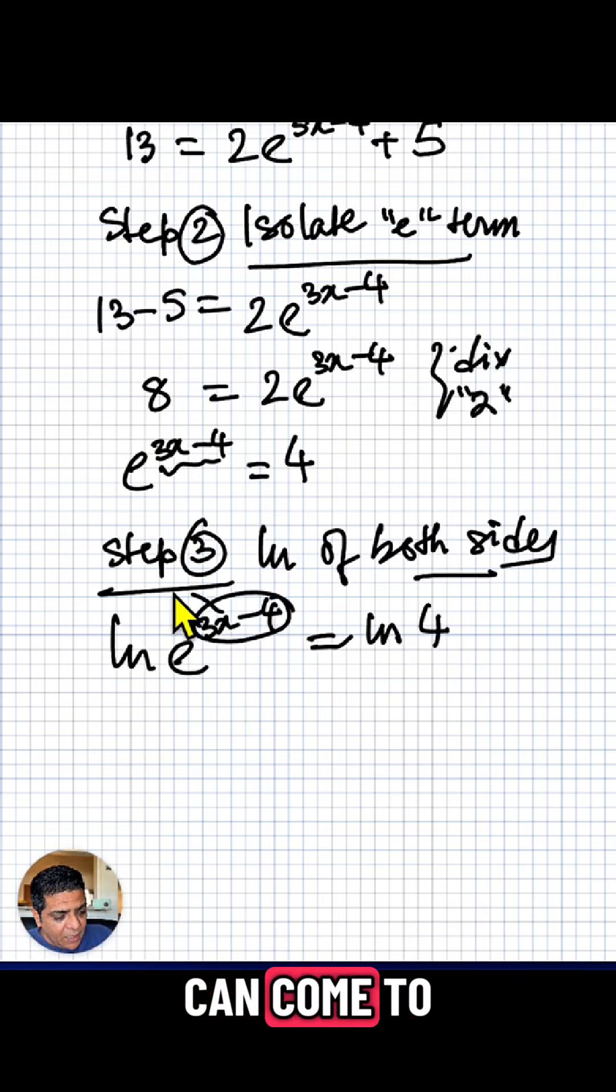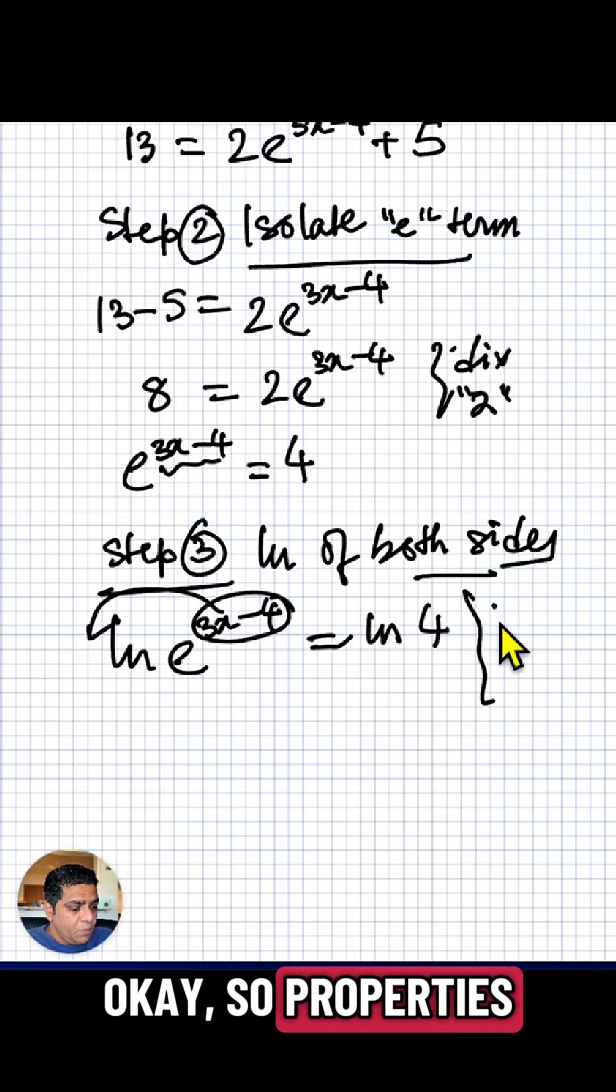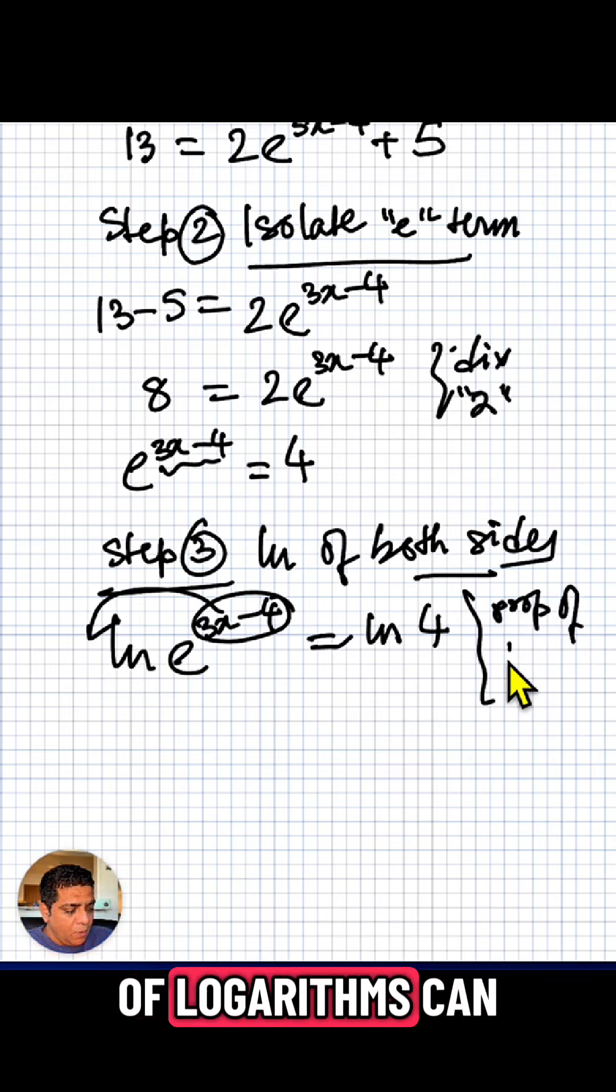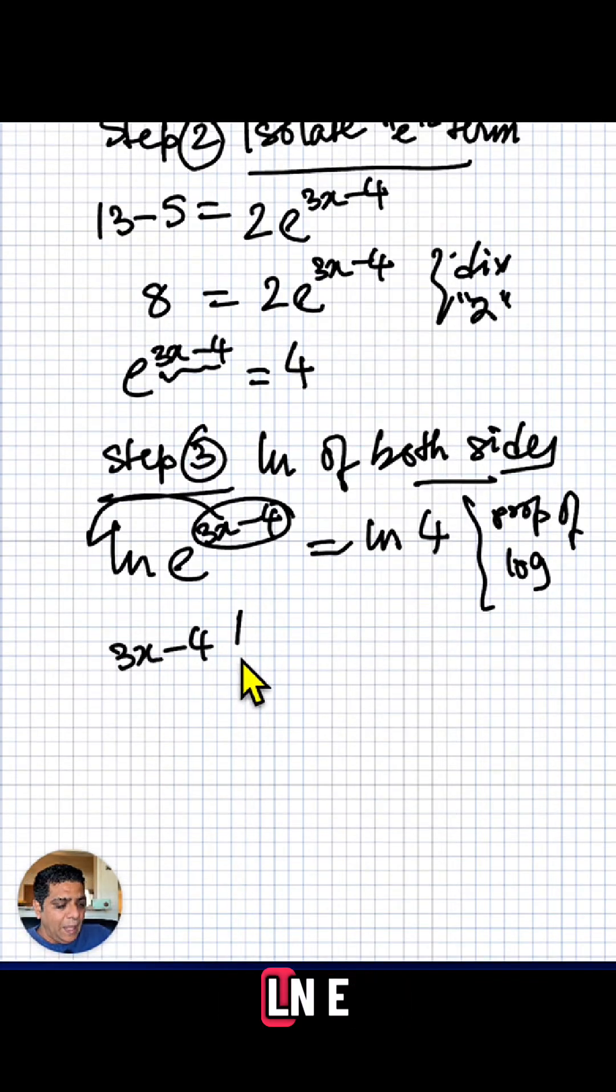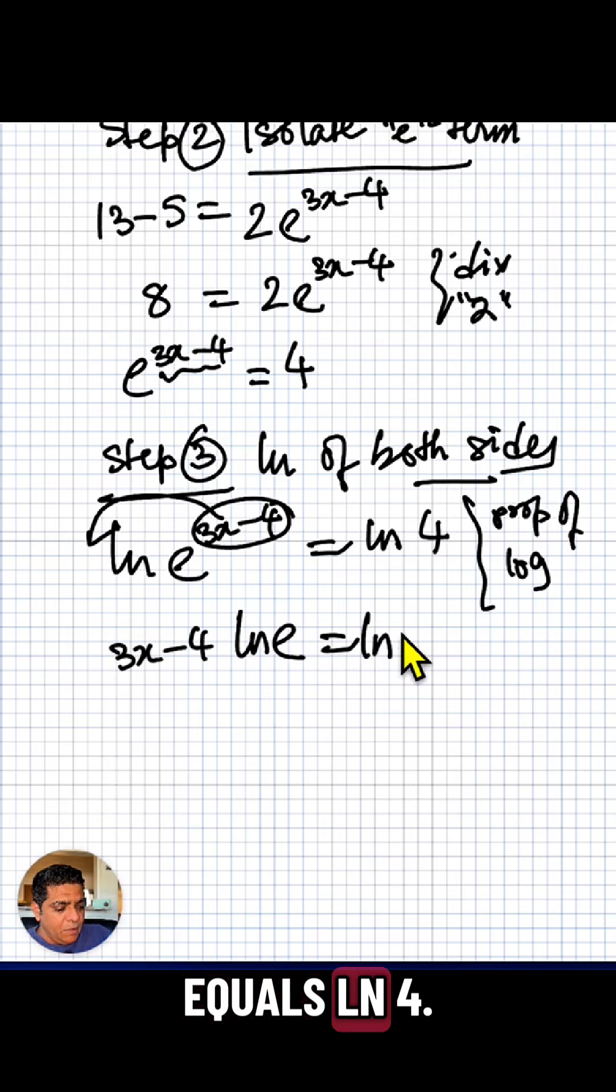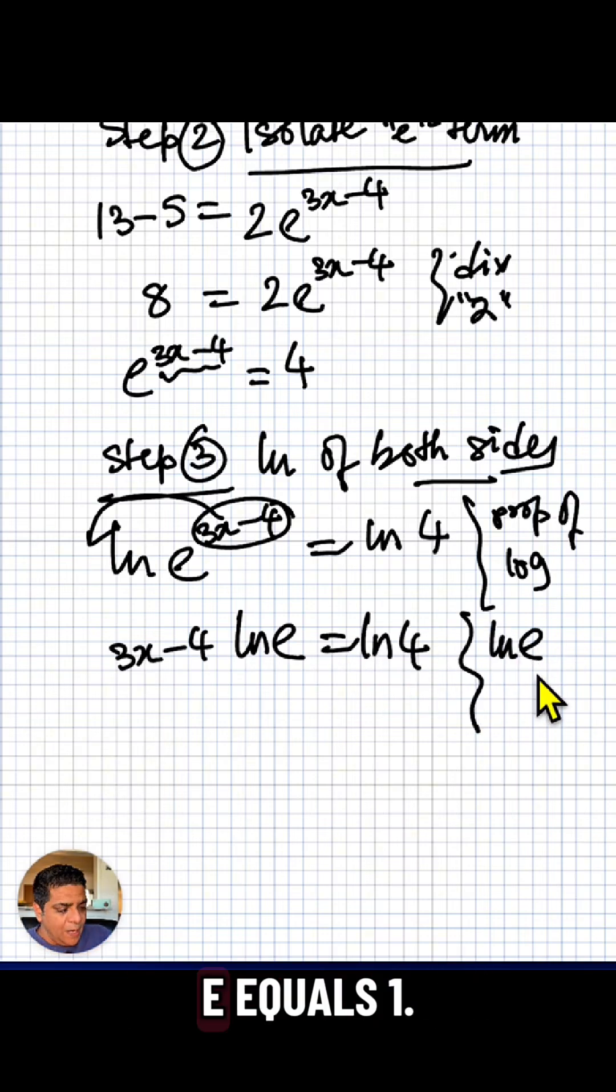Now, by properties of logarithms this can come to the front. So we can write 3x minus 4 ln e equals ln 4.